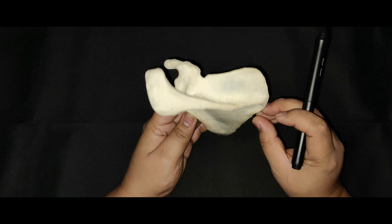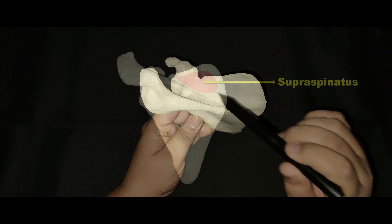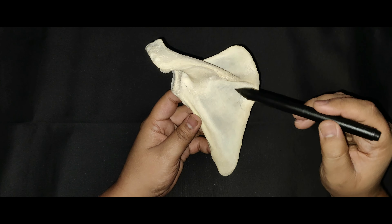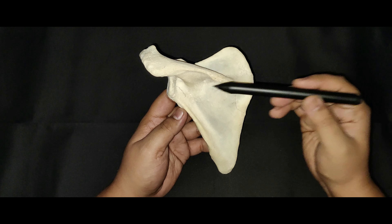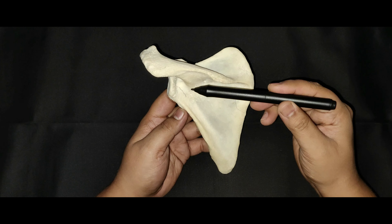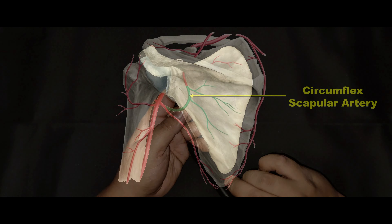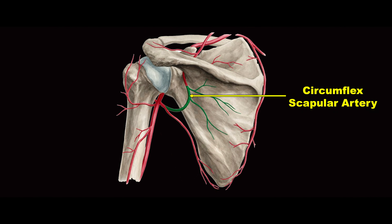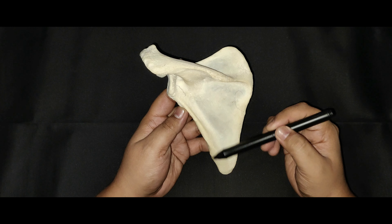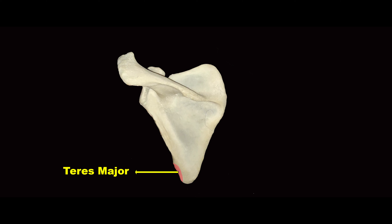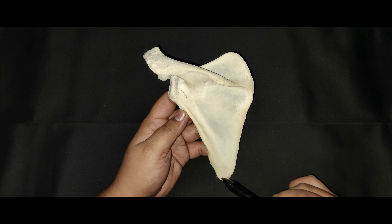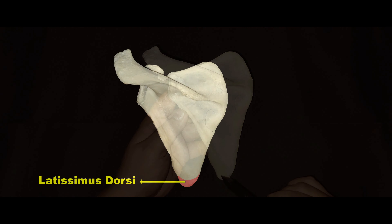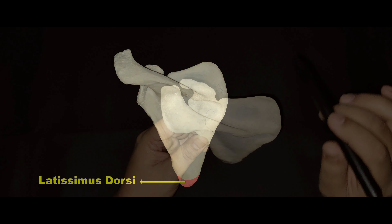The supraspinous muscle arises from the medial two-thirds of the supraspinous fossa. The infraspinous muscle arises from the medial two-thirds of the infraspinous fossa. The teres minor muscle arises from the upper two-thirds of the dorsal surface in the lateral border, and this origin is interrupted by the circumflex scapular artery. The teres major muscle arises from the lower one-third of the dorsal surface in the lateral border and the inferior angle of the scapula. The latissimus dorsi muscle arises from the dorsal surface of the inferior angle by a small slip.